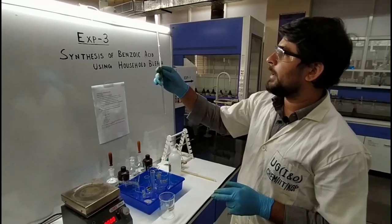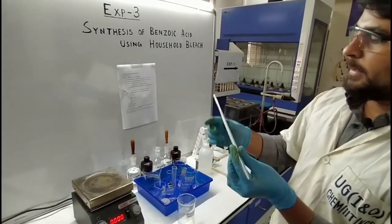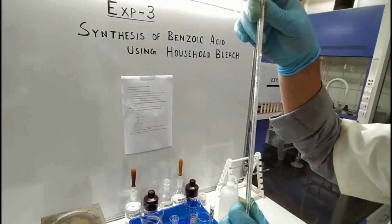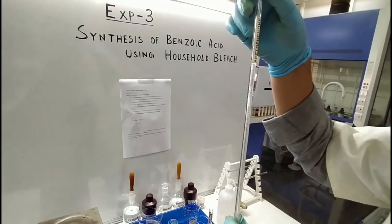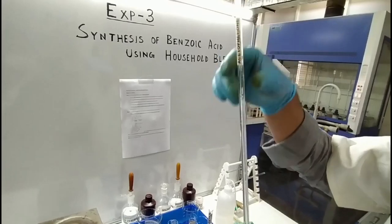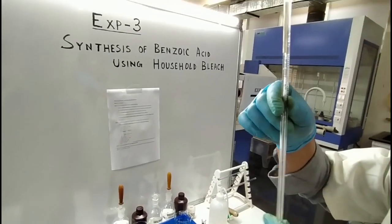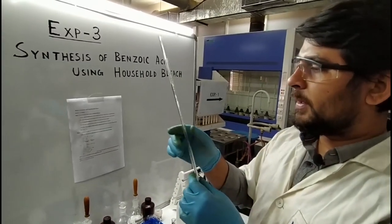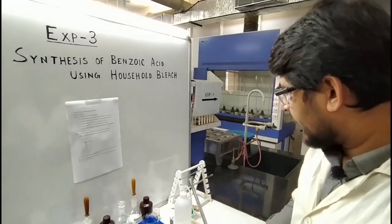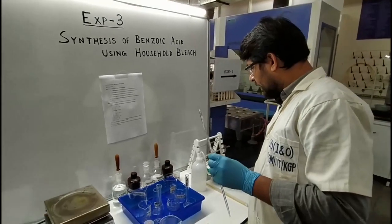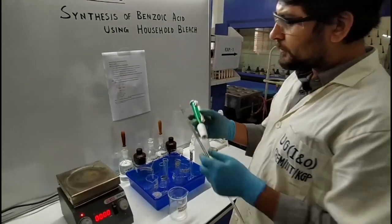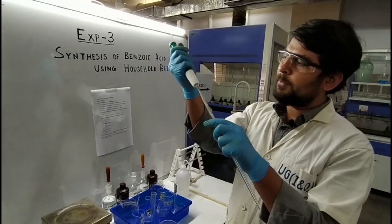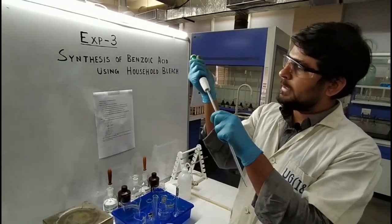Here you can find a pipette — this pipette is exclusively for Acid of Enol, and this can measure only 1 ml. How much is needed? 0.72 ml. So I am going to take 0.72 ml of Acid of Enol. This is the pipette, and this one is the pipette pump. First of all, we have to install it like this.